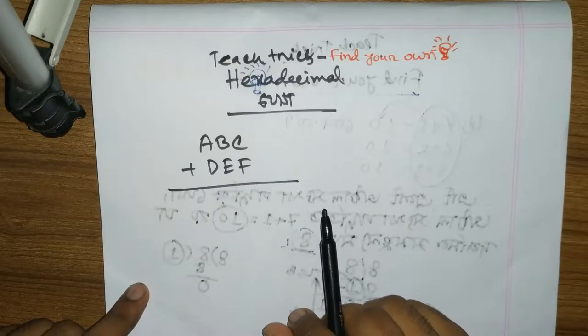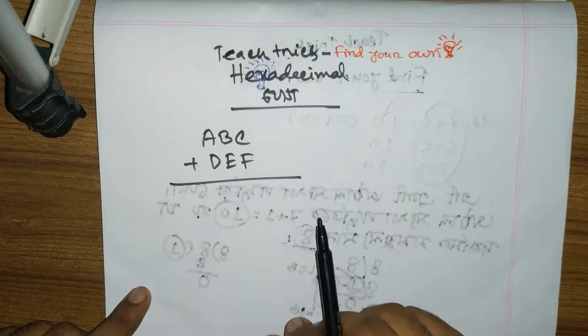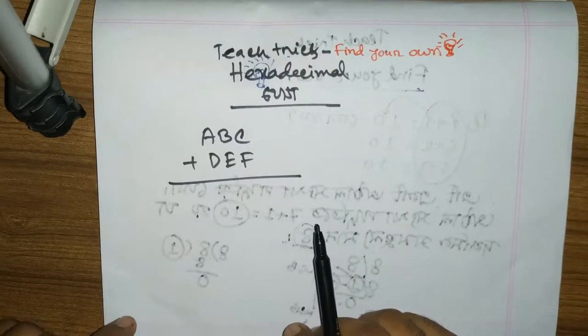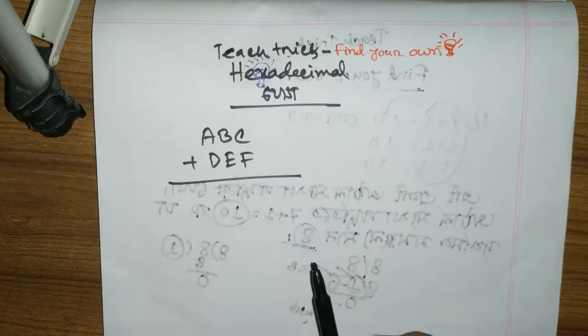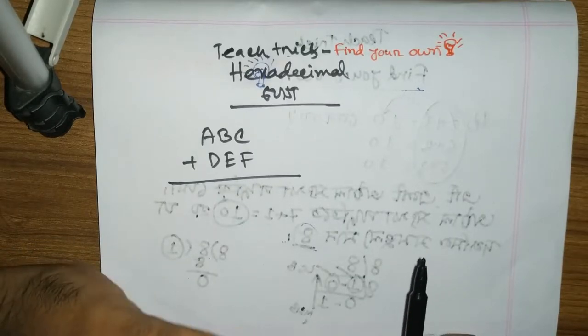Welcome to our channel Teach Trick, find your own light. Now we have to see hexadecimal addition. Here is a hexadecimal addition problem. This is a shortcut and a long method. The maximum value is the same way to make binary.